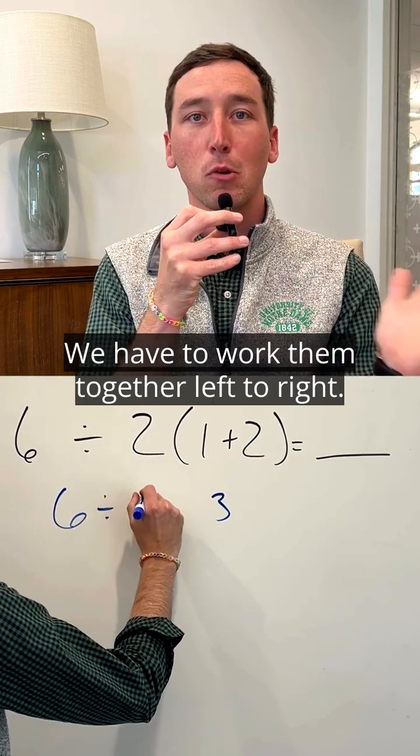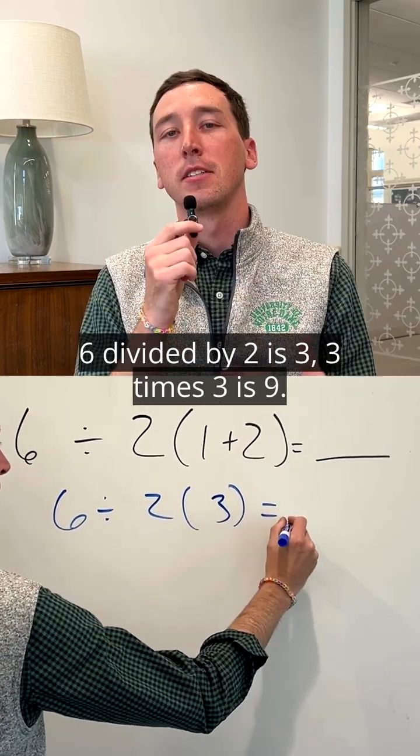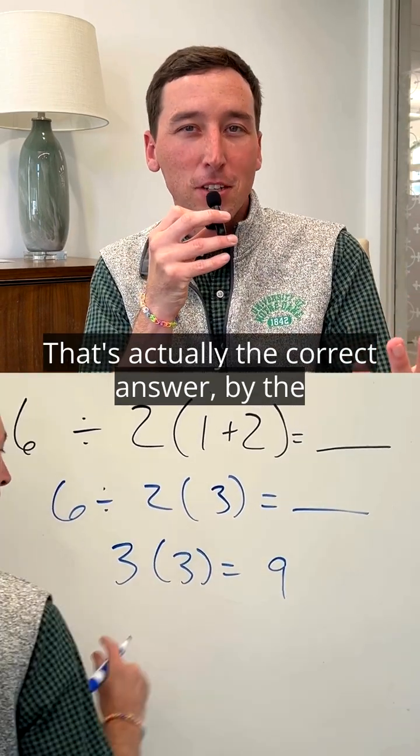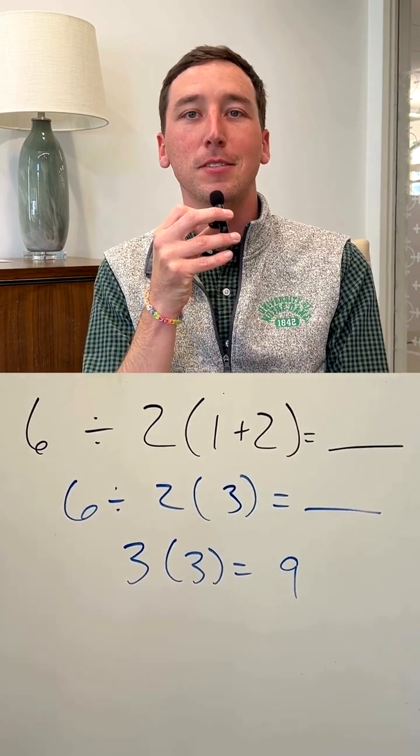Now is where the trick comes. We have to work them together, left to right. 6 divided by 2 is 3. 3 times 3 is 9. That's actually the correct answer by the order of operations.